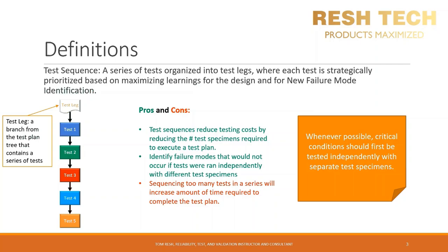A test leg is a branch from the test plan tree that contains a series of tests. As you can see in the flow diagram, a test leg is the identifier for an organized sequence of tests. You can have one test leg or many test legs, which are all part of the test program or test tree for the product.